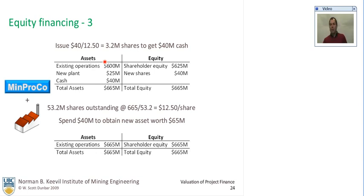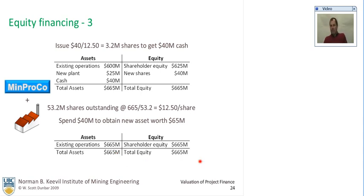You issue 3.2 million shares — that's $40 million over $12.50 — so you have to issue fewer shares because the share price is up, and you receive $40 million in cash. You now have another asset called cash, and you hold it until you find a contractor to build the plant. You now have 53.2 million shares outstanding at the same share price. You spend the $40 million to get a new asset worth $65 million, giving existing operations of $665 million. Shareholder equity is $665 million and everything balances.